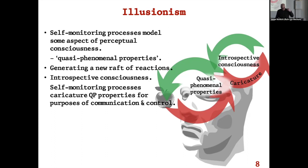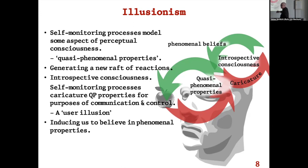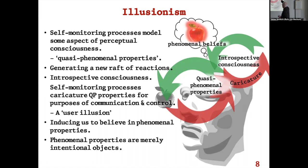This creates what Dennett calls a 'user illusion.' These are the things being monitored, and the effects are the user illusion — the appearance on the computer desktop, where the workings of the computer are the reactions at the top. One of these reactions is the generation of phenomenal beliefs — beliefs that this stuff has phenomenal properties. And phenomenal properties themselves are merely the intentional objects of those beliefs; that's the only place they exist, in the represented world of introspection.